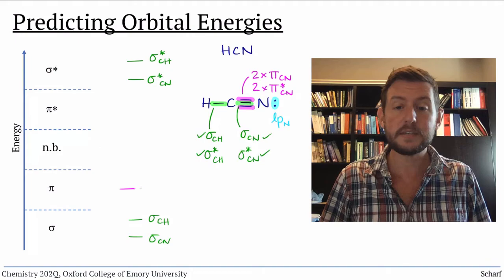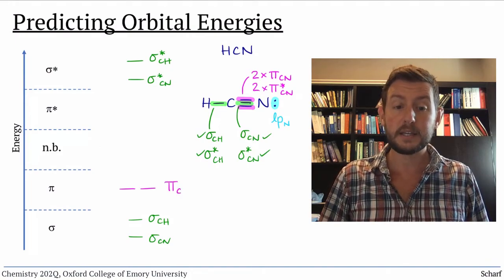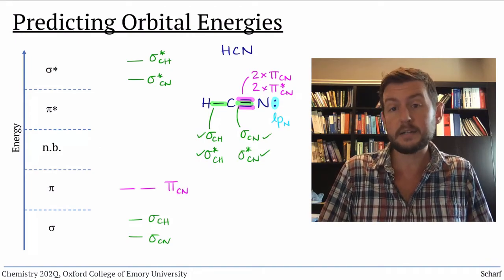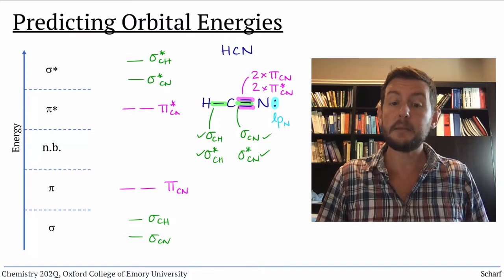Next, we have the CN pi bonds. Both are equal in energy because they're identical, and the CN pi star orbitals.